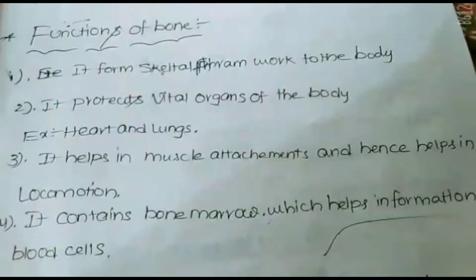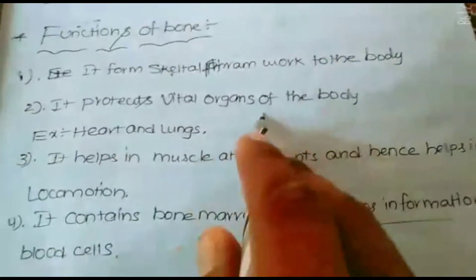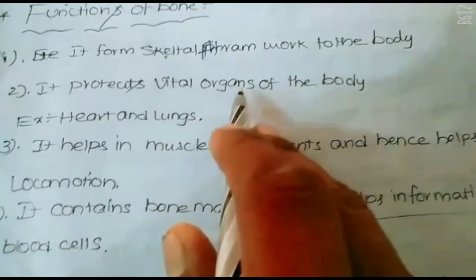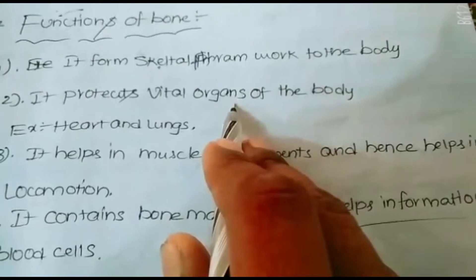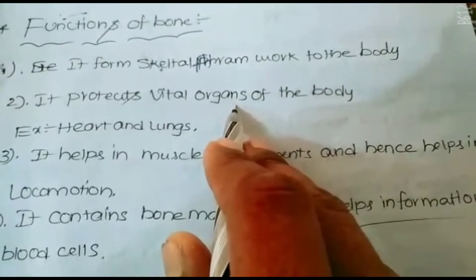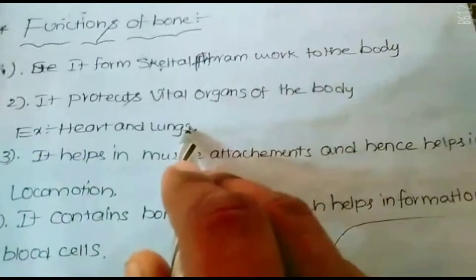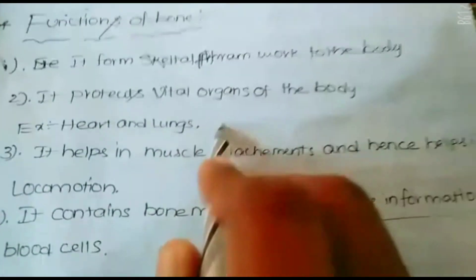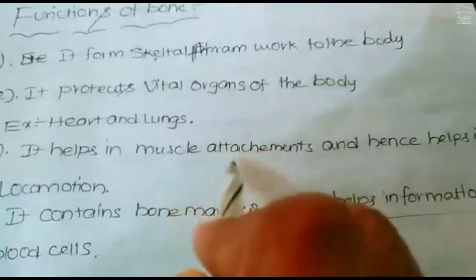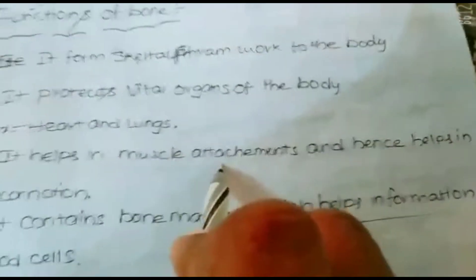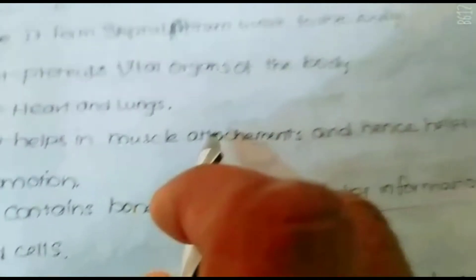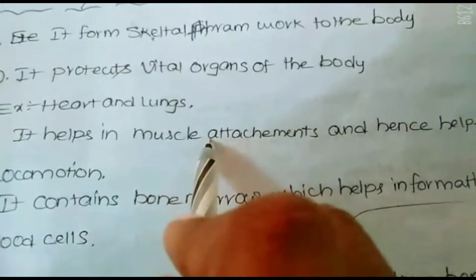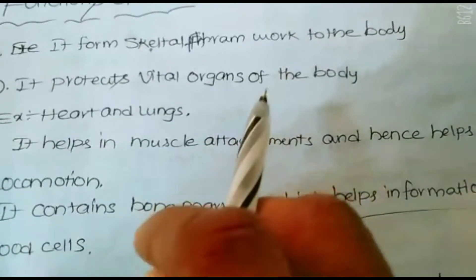Bone protects the vital organs of the body. The main important organs protected include the heart, lungs, kidneys, and other organs. Bone also helps in muscle attachments — muscles are attached to bones only.